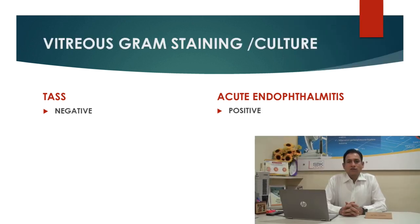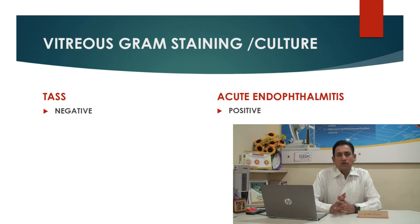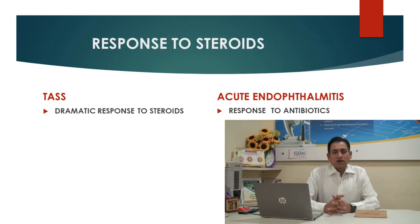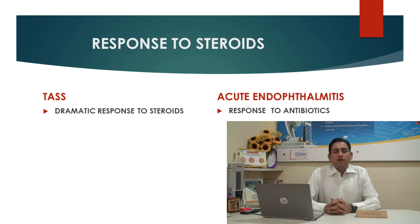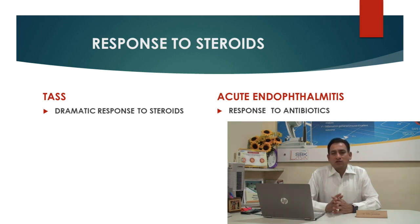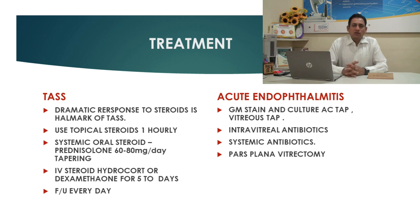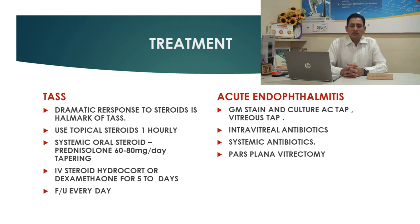Gram's test and culture from vitreous tap and AC tap will be negative in TASS cases, but they usually come positive in acute endophthalmitis. There will be a dramatic response to steroid in TASS cases, whereas in endophthalmitis there will only be temporary suppression of inflammation. Visual outcome is usually better in cases of TASS compared to acute endophthalmitis.